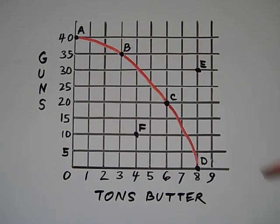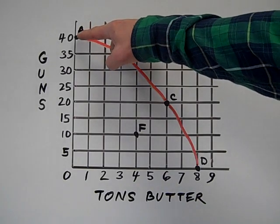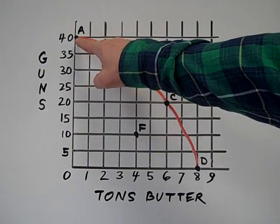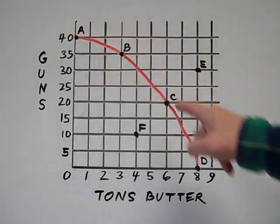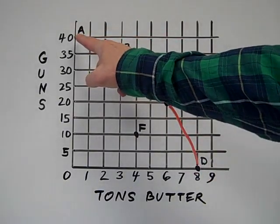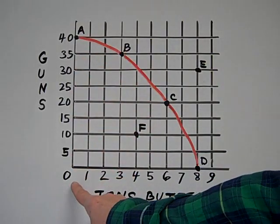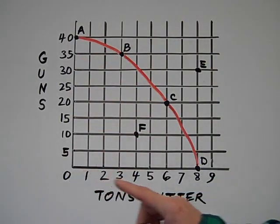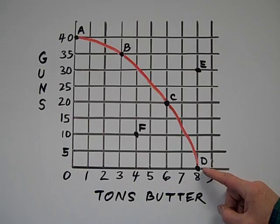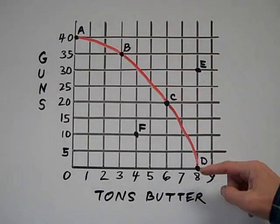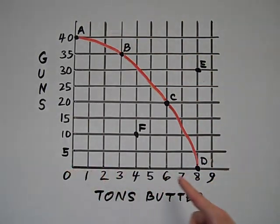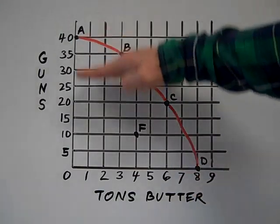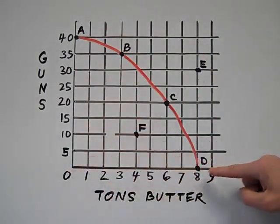As we see here, if this country wants to, they can produce 40 guns a day. If they want to be at point A, they can, because it's on this curve. But if they do, they're only going to produce zero tons of butter. Or they could choose to be at point D. That's possible too, because it's on the curve, which would mean they would be producing eight tons of butter, but zero guns.